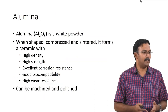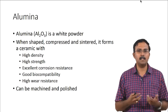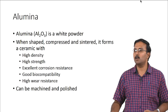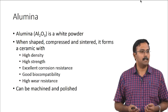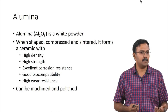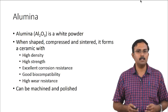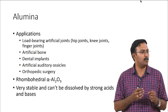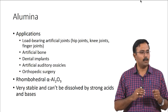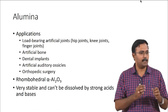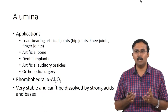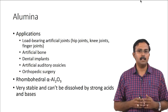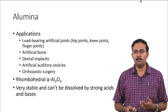Alumina is a bioinert material. It is actually a white powder that can be shaped, compressed, and sintered to form a ceramic with very high density and strength. It also has very good corrosion resistance, biocompatibility, and high water resistance. It can be machined and polished, and because of this it is used in hip joints. There are different structures of alumina — the rhombohedral alpha alumina is the one used for biomedical applications, including artificial bones, dental implants, artificial auditory ossicles, and orthopedic surgeries.